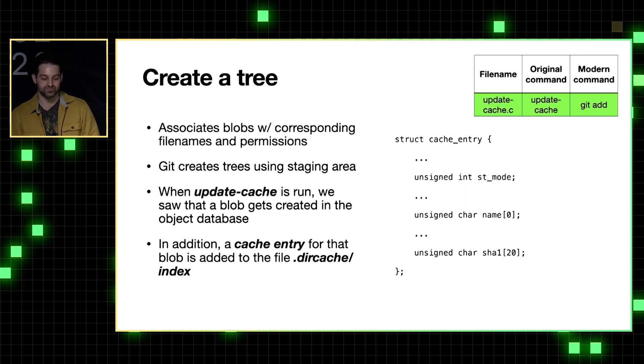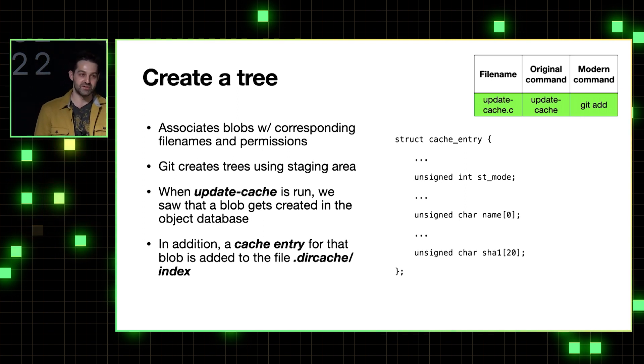So now that we have a happy new blob sitting in the object database, let's move on to trees. So a tree in Git associates blobs with their corresponding file names and permissions. And Git creates trees using the staging area, which you can think of as sort of a factory for building trees. And so we already saw that when we ran that update cache command, a blob gets created in the object database. But in addition, a cache entry for that blob is added to a file called .dir cache index.